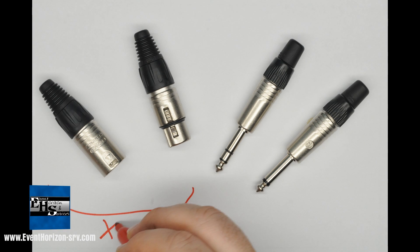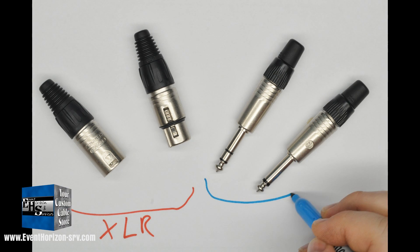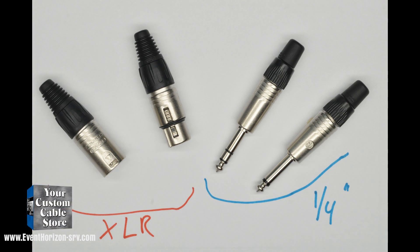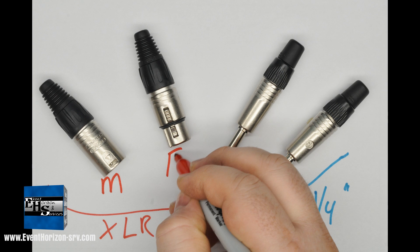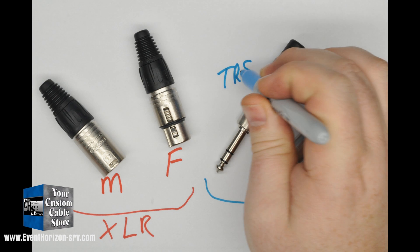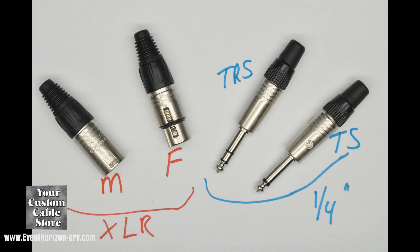Today, let's talk about the two most commonly used connectors in Pro Audio: the XLR and the 1/4-inch connectors. Here are the four main forms of the connectors: the XLR male, the XLR female, the TRS 1/4-inch, and the TS 1/4-inch.